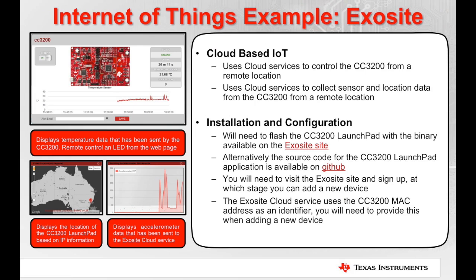The Exosite example provides a true-to-life cloud-based Internet of Things example. It communicates in both directions, using cloud-based services to control the Launchpad from a remote location. For example, you can press a switch on the remote website to turn on or off an LED on the CC3200 Launchpad. It also uses a cloud service to collect sensor and location data from the CC3200 remotely — for example, temperature and accelerometer data is sent to the Exosite site and displayed. To install and set up the example, you will need to obtain the binary or source code from Exosite and sign in for their service.